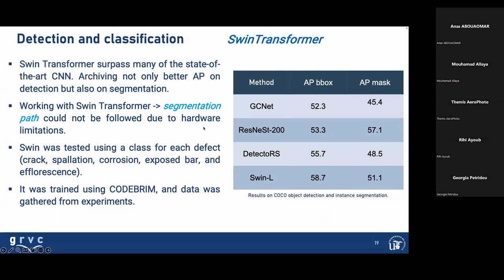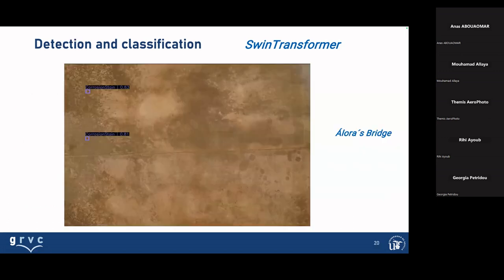You can see here results using different classes of defects with the Swin Transformer — crack, spallation, and corrosion — trained using the Colibri dataset gathered from experiments. The average of the bounding box and the mask metrics are actually very good. Here you see how we used the Alora bridge — the bridge available to us at that time. It was a very good bridge with very few defects. You can see here when we detect the corrosion stain and spallation.